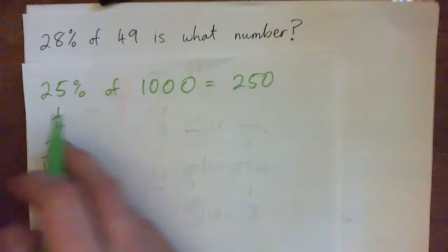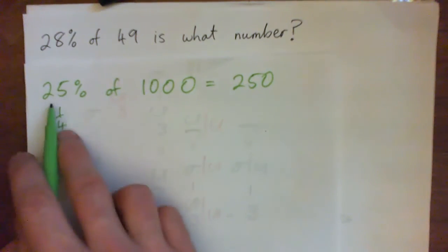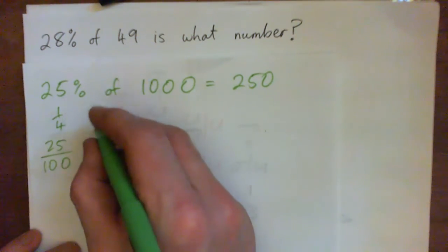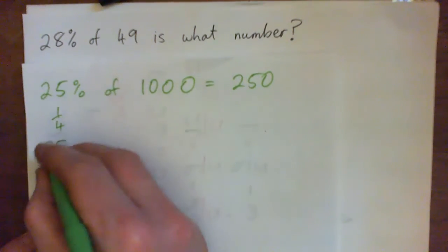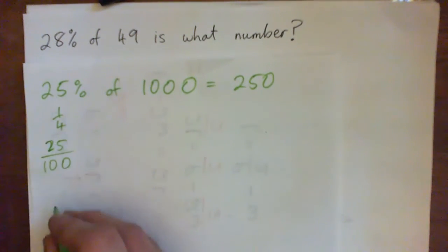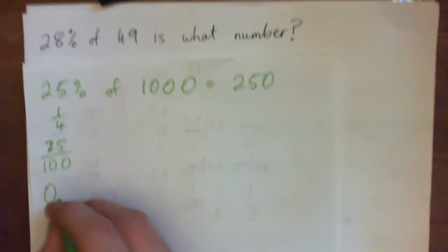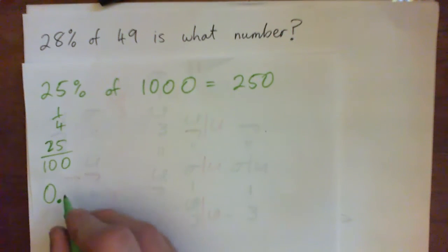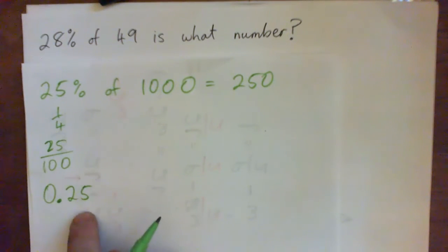But the way we would do this, actually, is we would turn 25% into a decimal. Right, so 25% is 25 over 100, so that's 0 point what? So it's 25 hundredths, so 0 point 2 5. Yeah, 25 hundredths is 0 point 2 5.